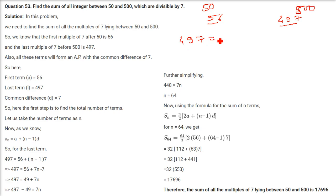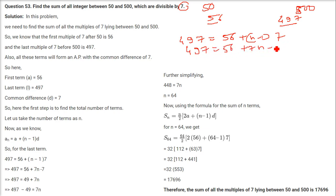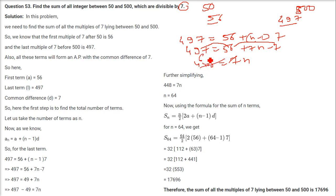We write: 497 = 56 + (N−1)×7, so 497 = 56 + 7N − 7, giving 56 − 7 = 49, and 497 − 49 = 448 = 7N. Dividing: 448 ÷ 7 = 64, so N = 64.